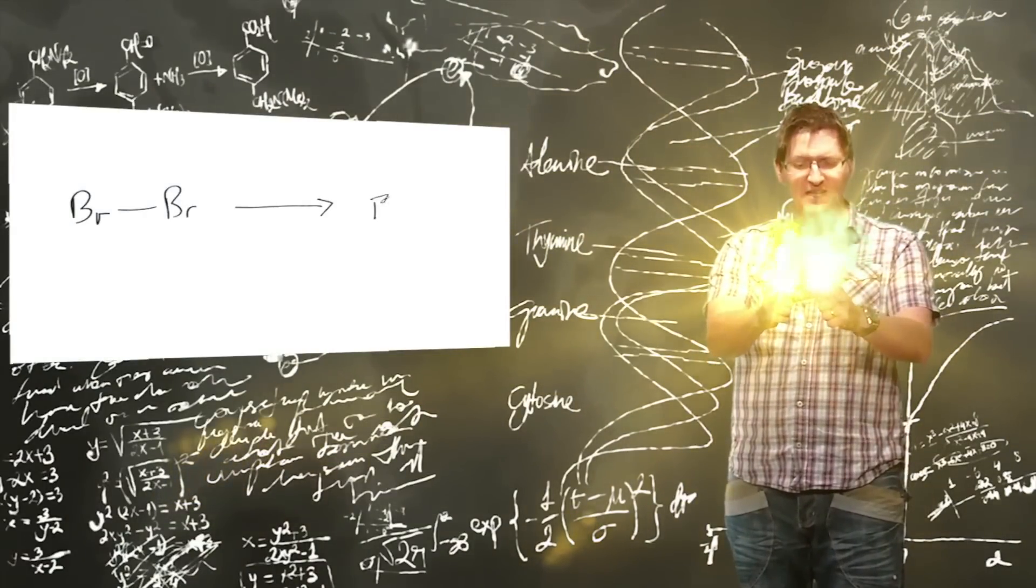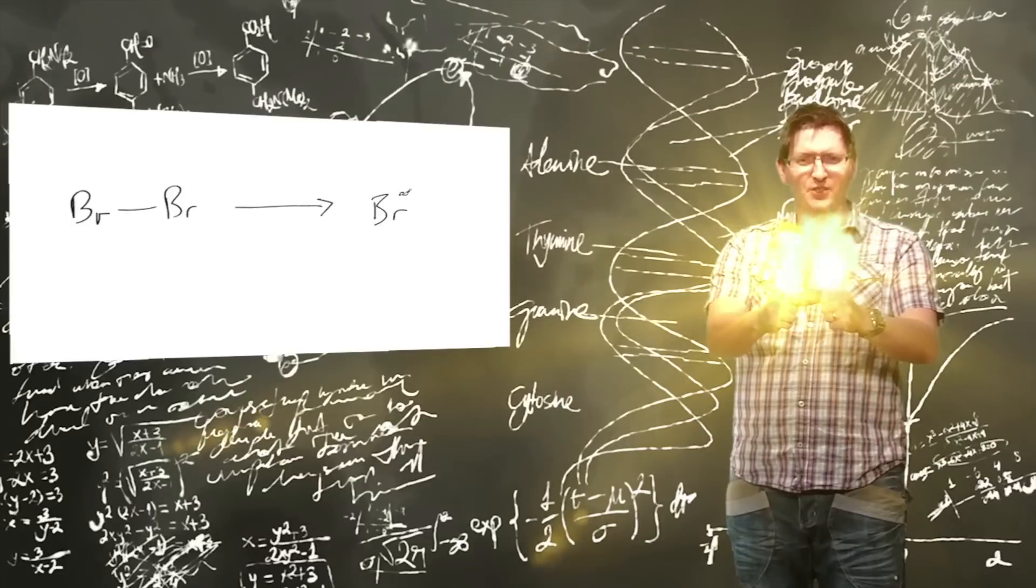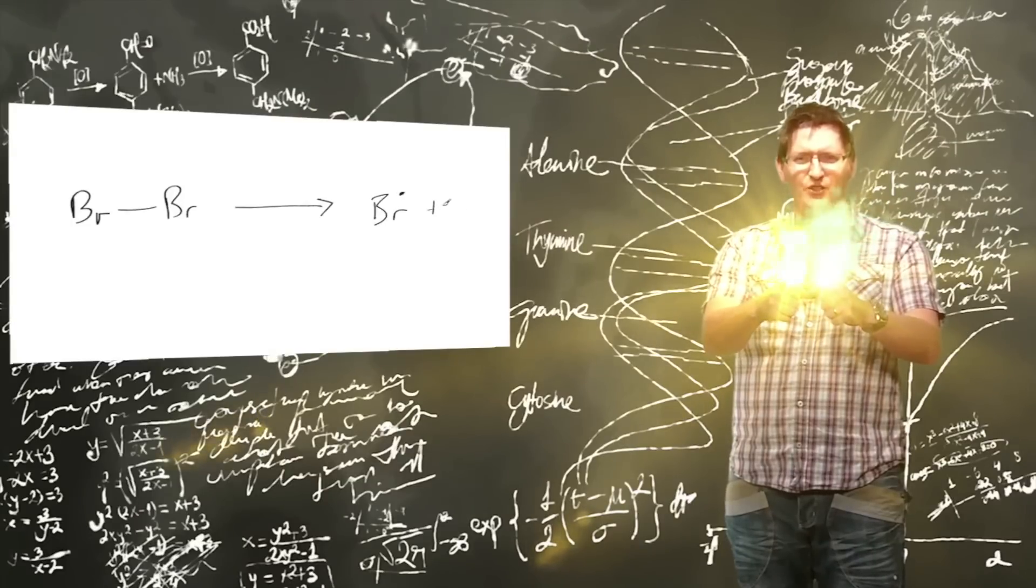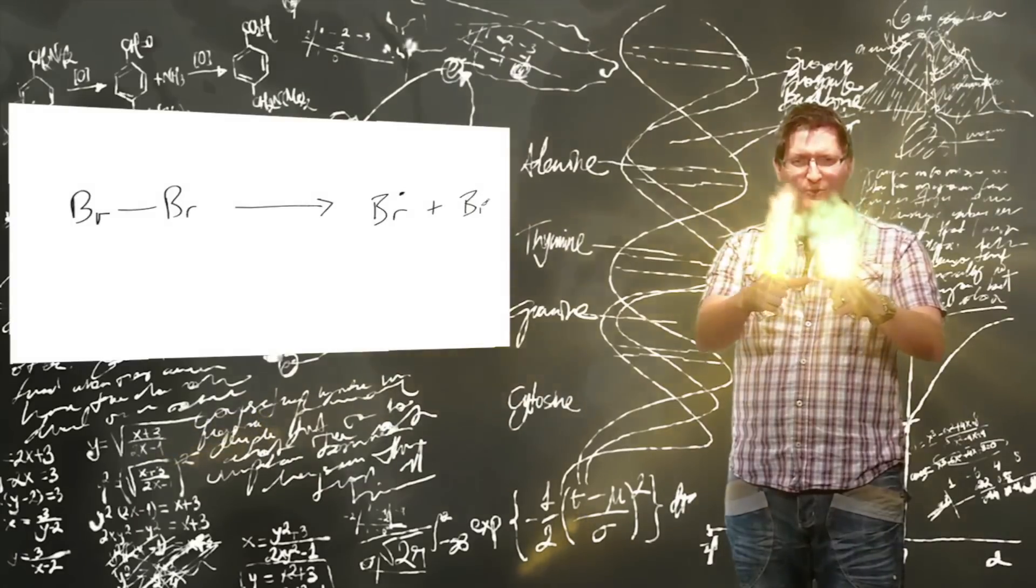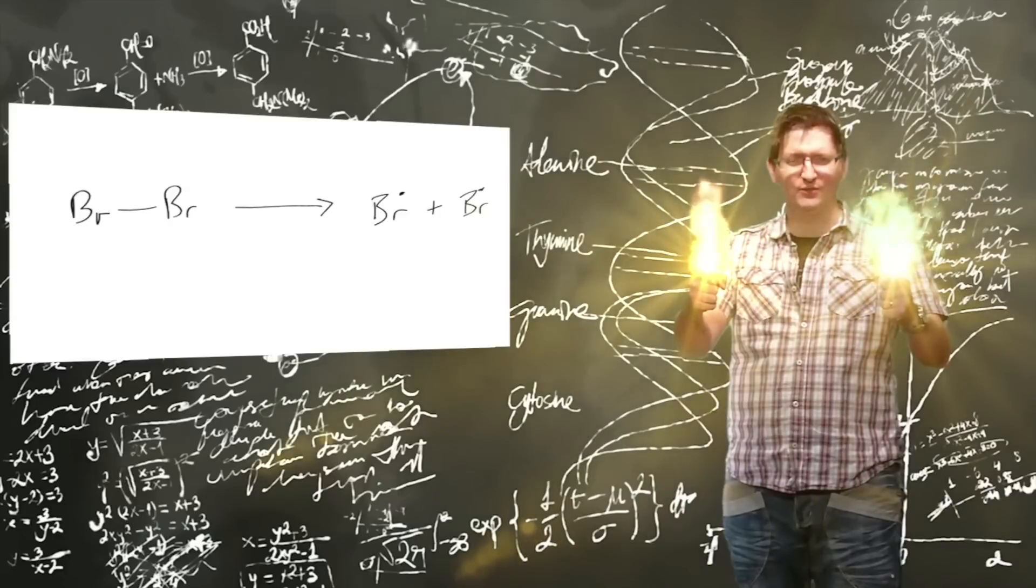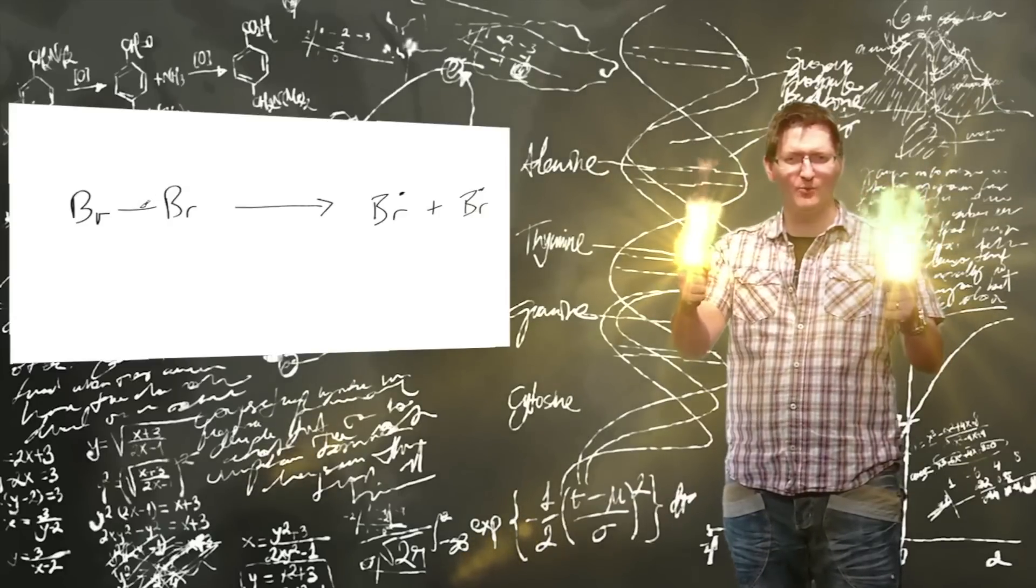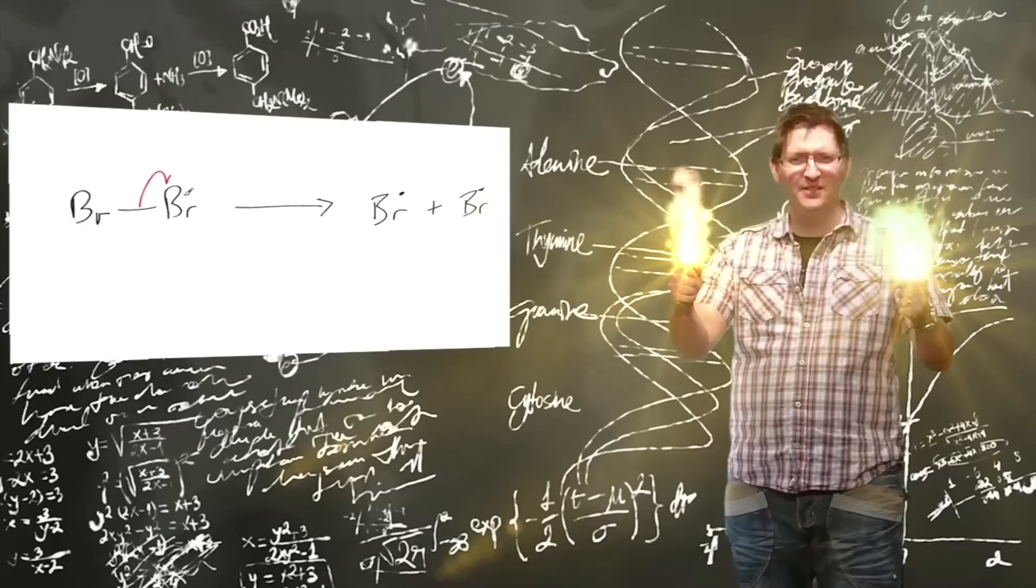What happens in UV light is they get enough energy for them to separate out. The electrons are quite happy to sit on both bromine atoms like this.